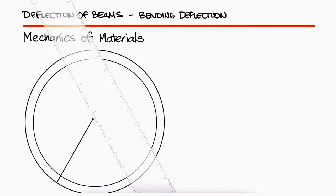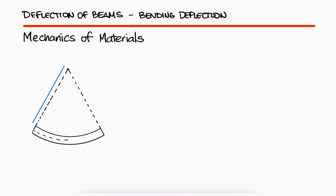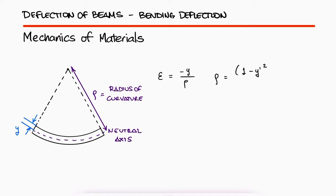Recalling from the bending stress main video two videos ago, and linked in the description of this video, we had defined the bending strain as y over rho, where y is the distance from the neutral axis of a bent beam, and rho is the radius of curvature. The radius of curvature for any function y of x is written as 1 minus y-prime squared, to the 3 over 2, divided by y double prime.